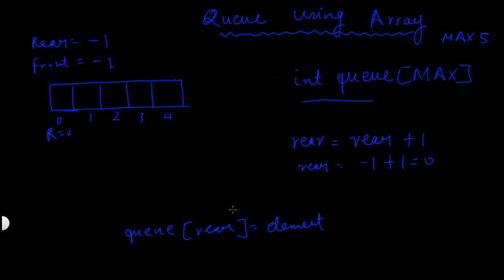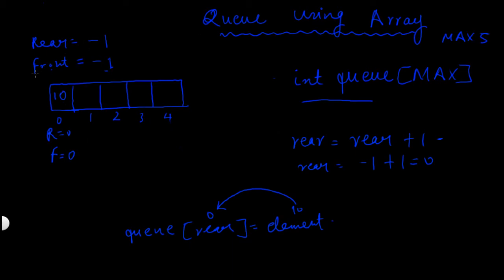The value of rear is 0, and suppose the value of the variable element is 10, so 10 gets inserted at position 0. The first time an element is inserted into the queue, the value of front changes from minus 1 to 0. This only happens during the first insertion. In this case, 10 was the first element inserted, and during the first insertion the value of front will always go from minus 1 to 0.